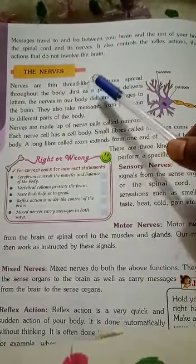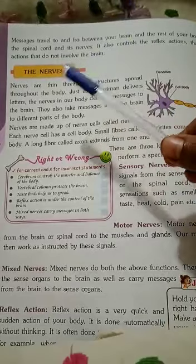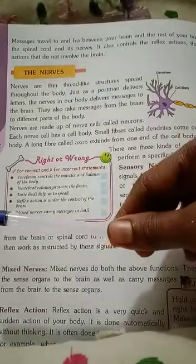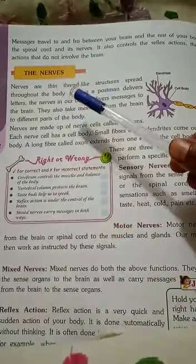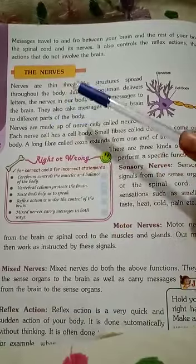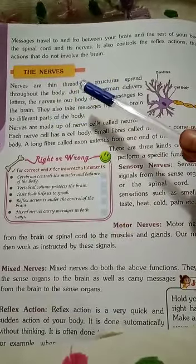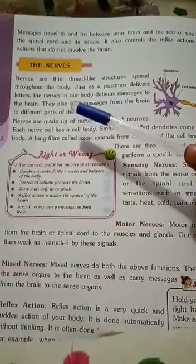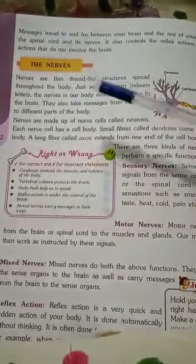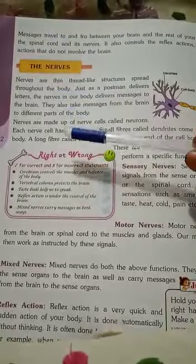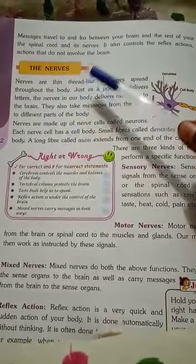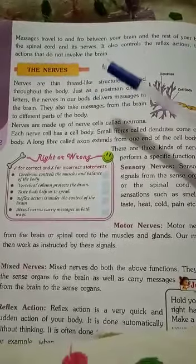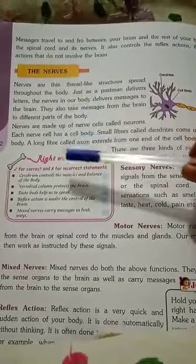If you touch something — by seeing only through the sense organ, if you touch it and it is hot — suddenly it is removed from that place. So the spinal cord and its nerves also control the reflex action. It controls everything, our entire body.